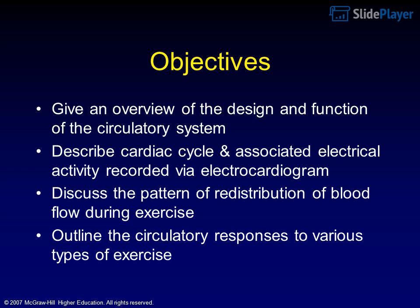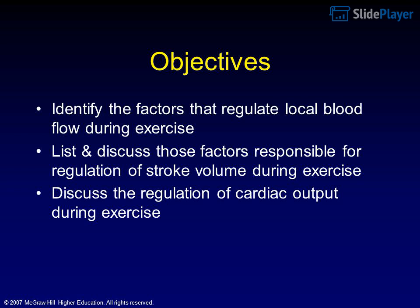Objectives: Give an overview of the design and function of the circulatory system. Describe the cardiac cycle and associate its electrical activity recorded via electrocardiogram. Discuss the pattern of redistribution of blood flow during exercise. Outline the circulatory responses to various types of exercise. Identify the factors that regulate local blood flow during exercise. List and discuss those factors responsible for regulation of stroke volume during exercise. Discuss the regulation of cardiac output during exercise.